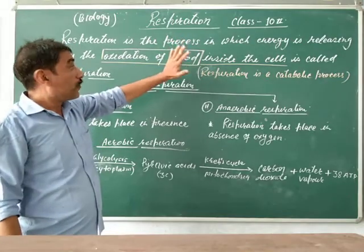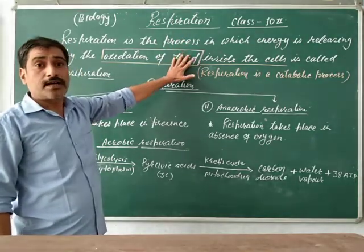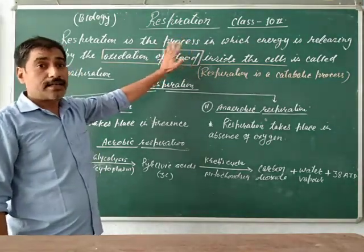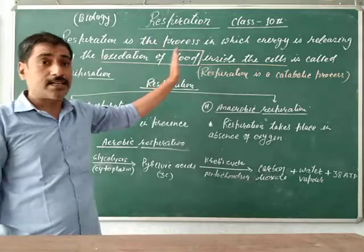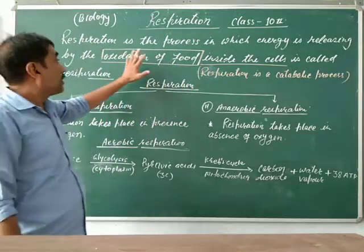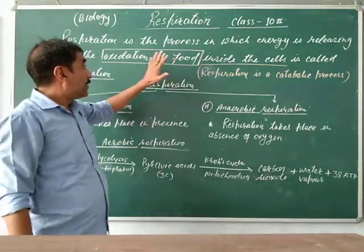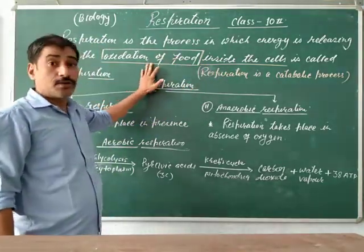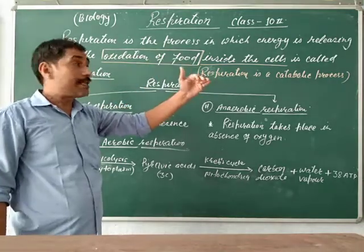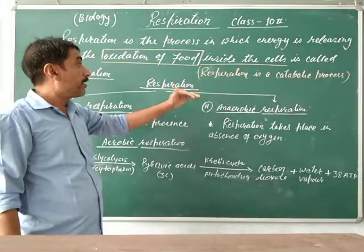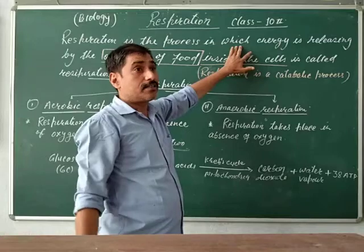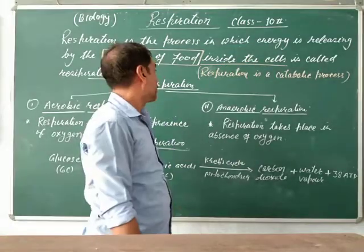This food comes from assimilation. In the previous lesson, you learnt about the digestive system. The digested food goes to the cells of the body for releasing energy and some other functions.